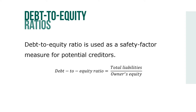Debt-to-equity ratio is used as a safety factor measure for potential creditors. The ratio compares the total debt of the firm with the owner's equity. It tells the amount of debt incurred by the company for each dollar of equity. It is commonly expressed as a percent, where debt-to-equity ratio equals total liabilities over owner's equity.